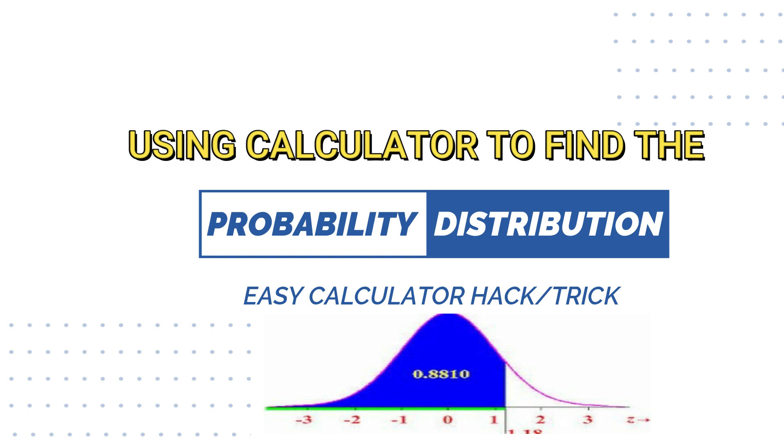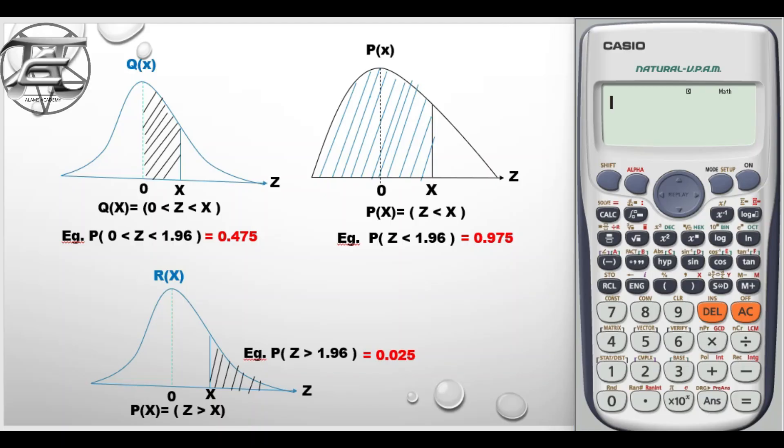I shall be using this example to explain it very well. When we are talking about the probability distribution which is of P(x), Q(x), and R(x), these are the things you will find in your calculator. Before you could key anything inside your calculator, your calculator must be in the stat mode.